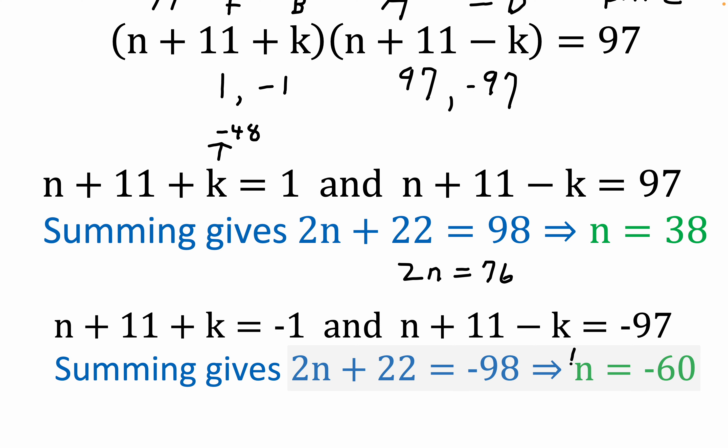So these are the two solutions and the only two solutions, owing to the primality of 97. N equals 38 is the positive integer solution, and n equals minus 60 is the negative integer solution. Hope you enjoyed that and I liked it.